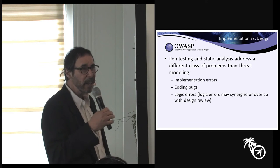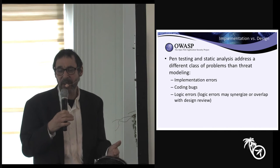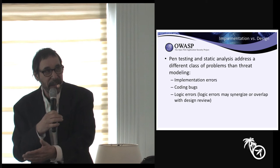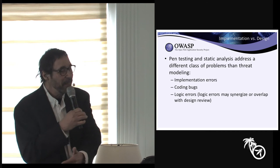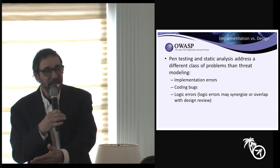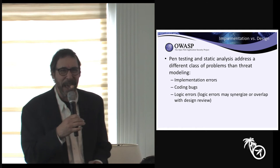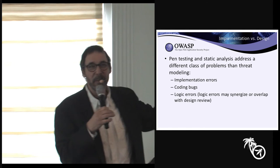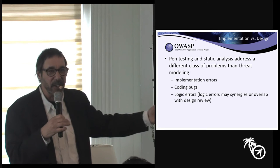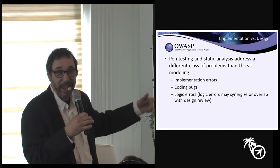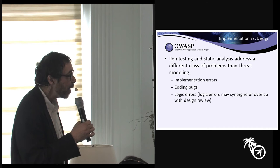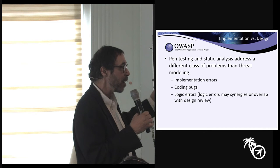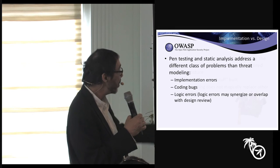Another design issue: deciding to use one universal credential — like a universal password or certificate — that's a design problem. Those are design issues and they're not necessarily going to be found by a pen test. The purpose of a threat model is to find out what attack surfaces and assets have not been properly protected, and generate requirements that can then be built or consciously deprioritized.